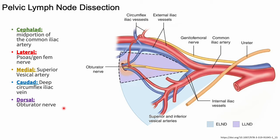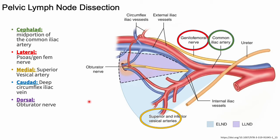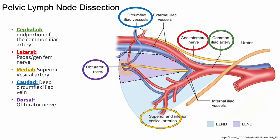Here's a really nice picture. Your cephalad boundary is the mid-portion of the common iliac, so you're seeing that here. Laterally, you have your genitofemoral nerve, and you can imagine the psoas running here with it. Medially, you have your superior vesicle artery — you have your internal coming down, with the superior vesicle likely giving off the uterine, with ureter over the bridge here. Caudad is the deep circumflex iliac vein, which we rarely see during dissection but you do sometimes. And then dorsally, your obturator nerve — the floor.